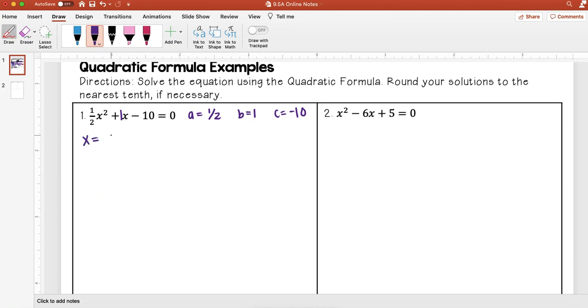So I'm going to start with just copying down my formula. So negative b plus or minus the square root of b squared minus 4ac all over 2a. And then I'm going to go ahead and plug in my values. So negative my b value here is 1. You notice whenever I'm plugging in, I just go ahead and always put parentheses around it. It's better to be safe than sorry.